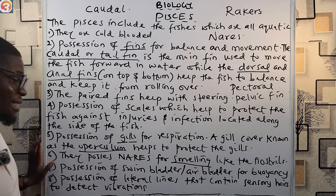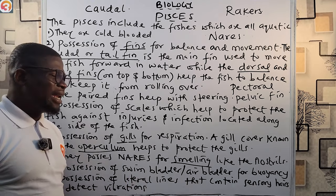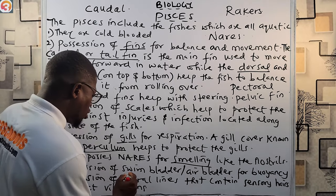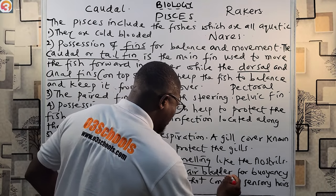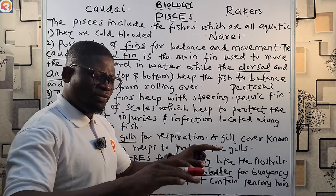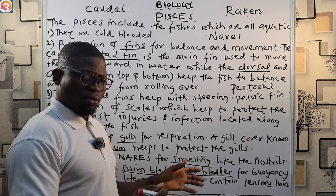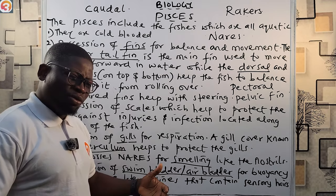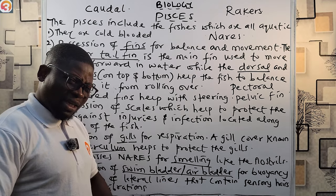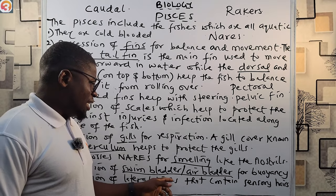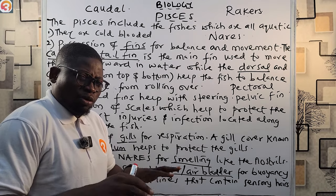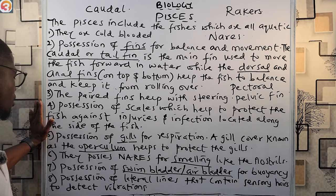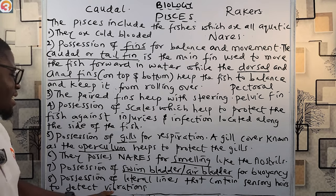Number seven: possession of a swim bladder, also called an air bladder, for buoyancy — to keep the fish afloat. This swim bladder contains gas or air, which helps the fish stay afloat on the water and prevents it from sinking.